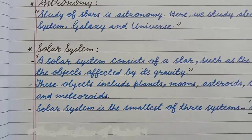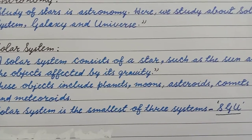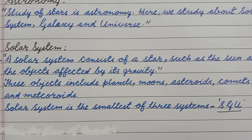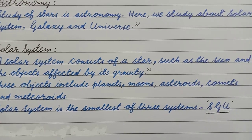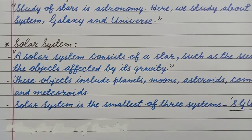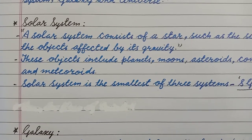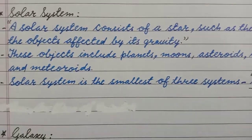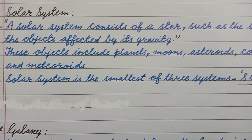Solar System. A solar system consists of a star such as the sun and the objects affected by its gravity. These objects include planets, moons, asteroids, comets and meteoroids. Solar system is the smallest of three systems.